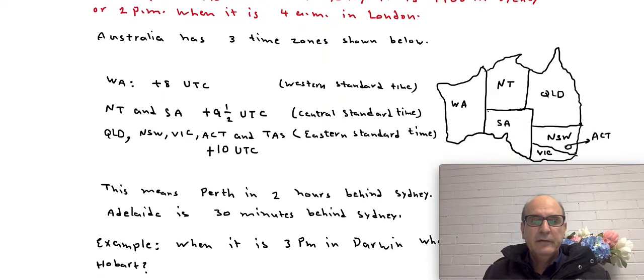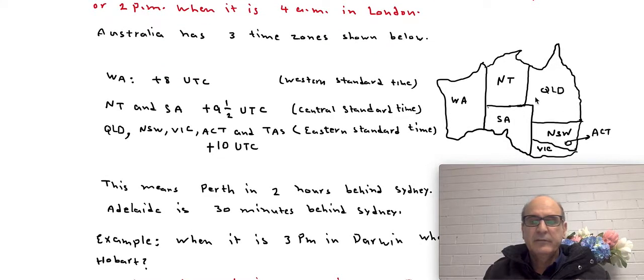The other thing which we cover in this lesson is Australian time zones. Because Australia is a large country in terms of its area we need to define different times. So that's why we split the whole Australia into three parts. One part is Western Australia and this follows the Western Standard Time. Then we have Northern Territory and South Australia. This follows Central Standard Time.